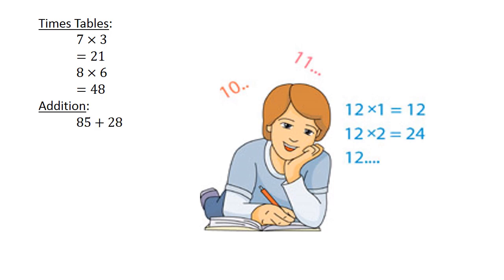Addition: 85 plus 28 equals 113. Subtraction: 91 minus 76 equals 15.